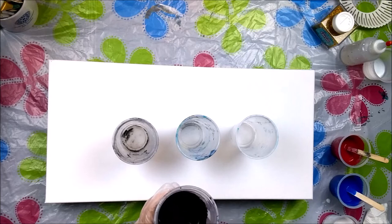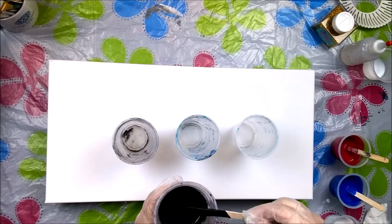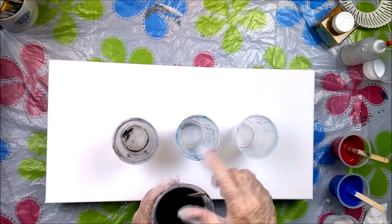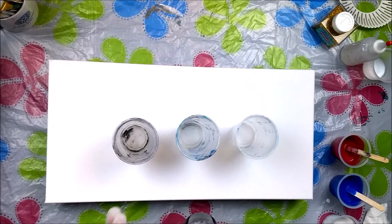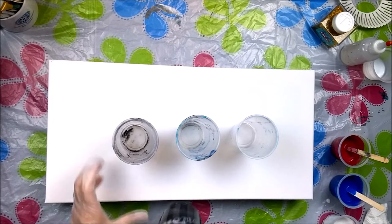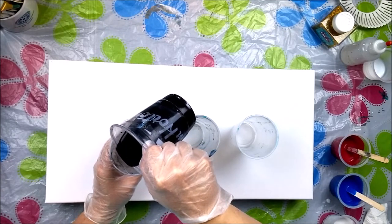Now I didn't put any water in this. The black flow acrylic is mixed about 1.5 parts of Floetrol to one part of paint. I want it thick so it doesn't mix so much, so we don't get really muddy colors. I'm going to pour some of this in each of the cups.